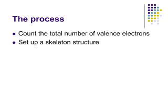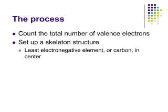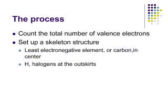Next, set up a skeleton structure — arrange the atoms so you can start connecting them with covalent bonds. Put your least electronegative element in the middle as your central atom. If you have carbon in your molecule, it will probably be the central atom. Hydrogen will never be a central atom; it will always be on the outer edges. Most of the time, halogens will also be on the outskirts and form only a single bond, though there are exceptions.